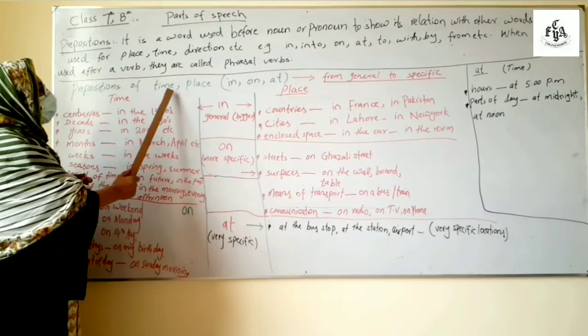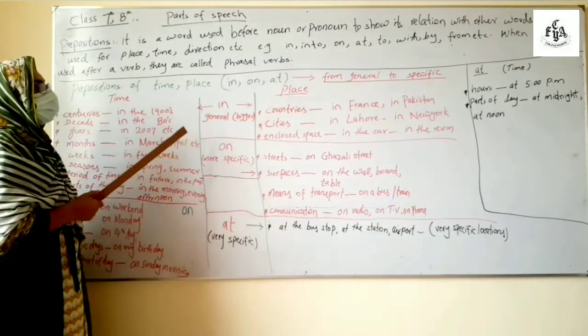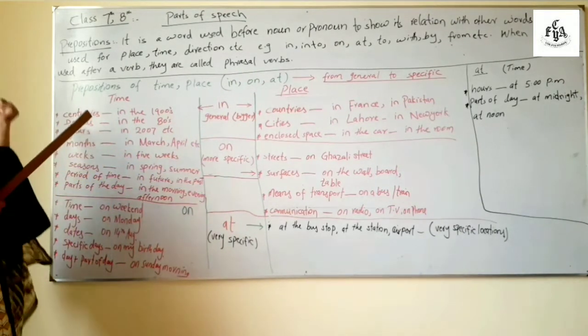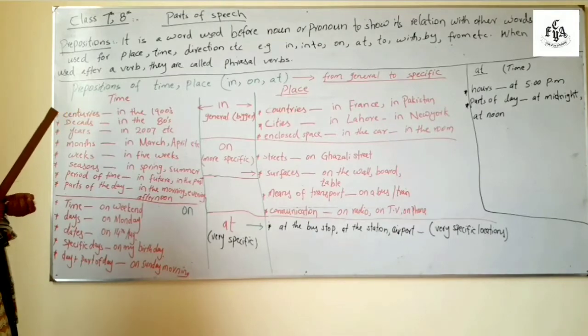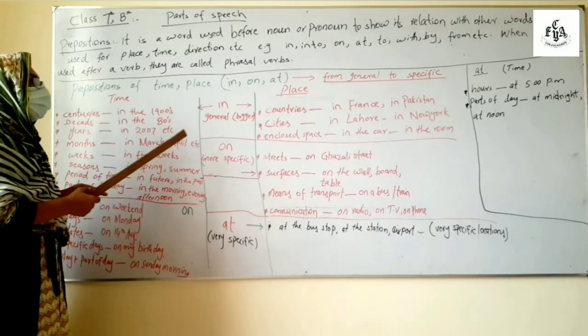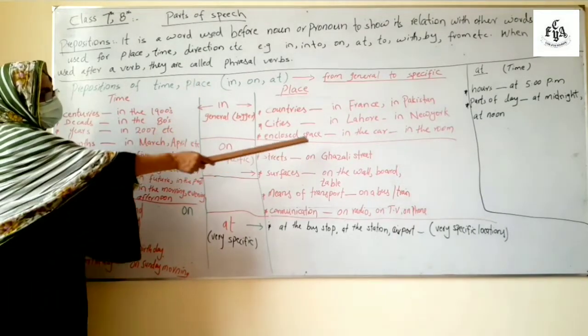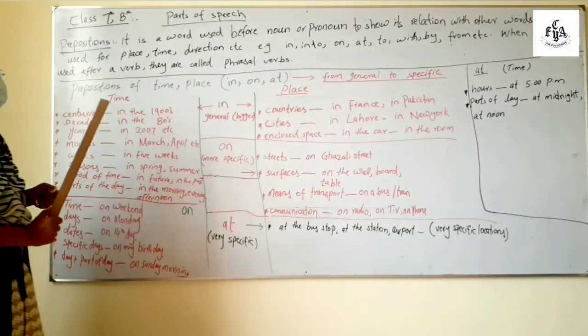Prepositions of time and place. These three are the most important. They are used for time and place both. So here you have proper guidelines where for time you use in, on, at and where for place you will use in, on, at.